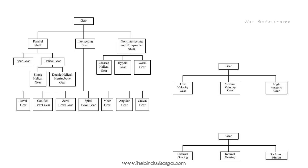Gears can be classified according to the position of the axis of the shaft. We have parallel shaft, intersecting shaft, and non-intersecting and non-parallel shaft. Based on parallel shaft, we have spur gear and helical gear. Helical gears are subdivided into two categories: single helical gear and double helical gear, also known as herringbone gear.